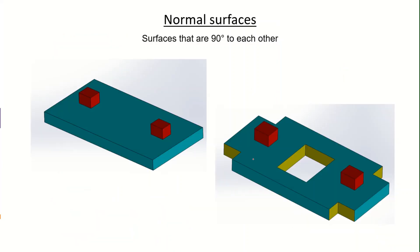Now let's look at the different types of surfaces and edges referred to in engineering drawing. Starting with normal surfaces: these surfaces are 90 degrees with respect to each other. If any of these surfaces are not in the same plane, they are 90 degrees to one another, and so these are called normal surfaces.